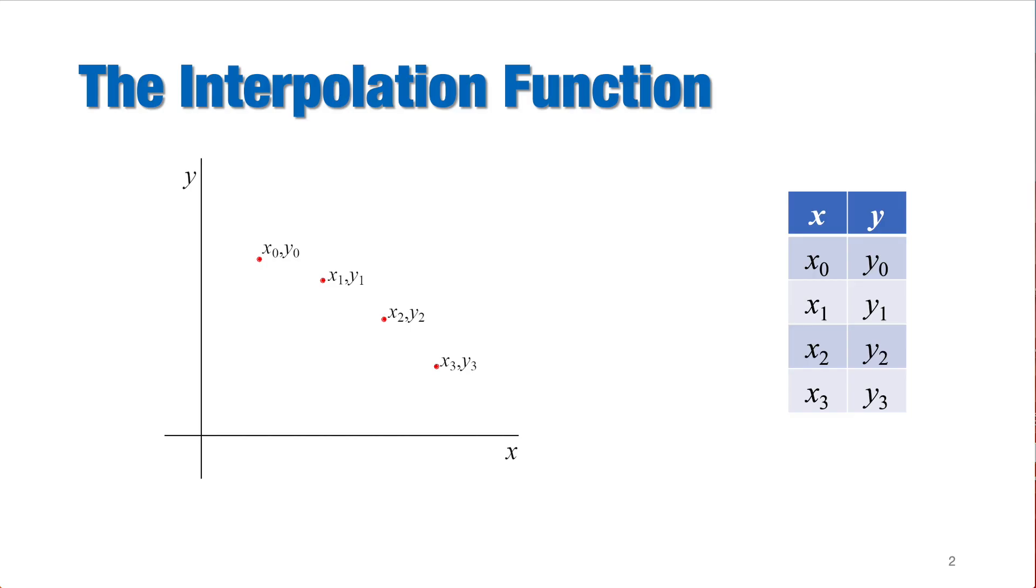The interpolation is a method used to find one or more intermediate values into a series by calculating them from surrounding given values or points using a mathematical function. In interpolation, the given data points should satisfy that function. For example, for the four data pairs of xy values, which are shown here as red points on the graph, the curve of the interpolation function px correspondent to these points should pass through all of these points.